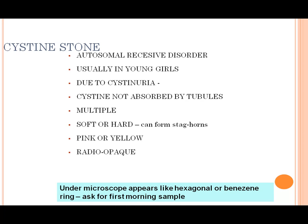Cysteine stone: it is an autosomal-recessive disorder, usually occurring in young girls due to cystinuria.